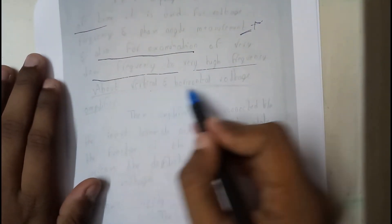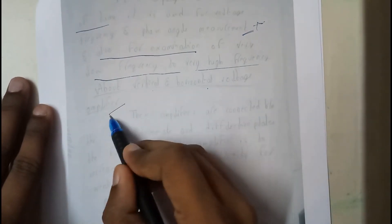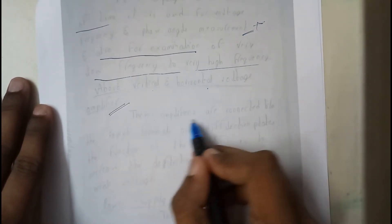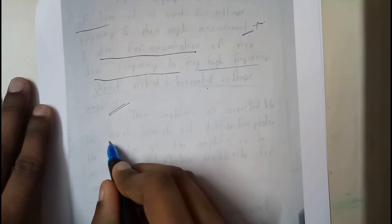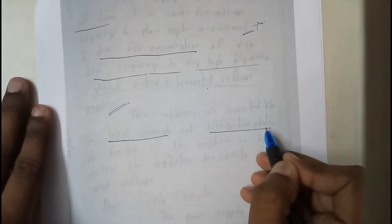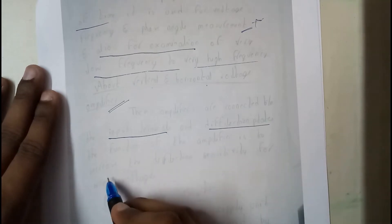The vertical and horizontal amplifiers are connected between the input terminal and the deflection plates — that is, the horizontal and vertical plates. The function of the amplifier is to increase the deflection sensitivity of weak voltages, so if there is a low voltage signal it makes it bigger and clearer so we can measure it.